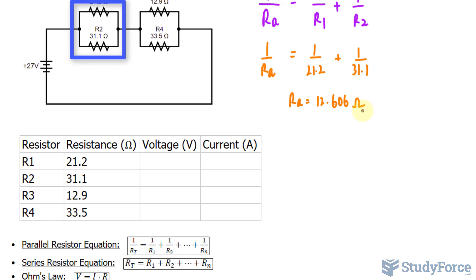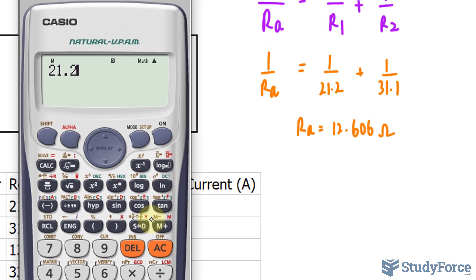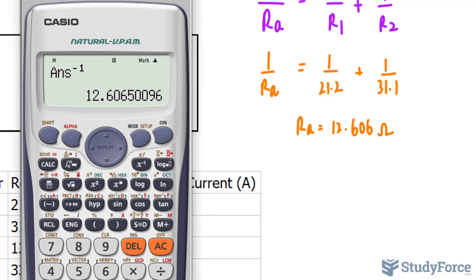That's the resistance of these two combined. Now another way to do this on your calculator, if you have a scientific calculator like mine, is you can type in 21.2, and then if you have this button, click it. That reciprocates 21.2, making it 1 over 21.2. Plus 31.1, and that button again, you get the following value, and then again you press it a third time to get 12.606. It's up to you which method you choose.